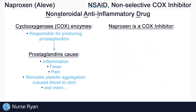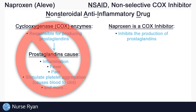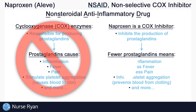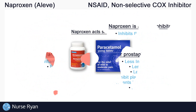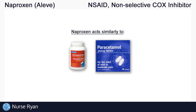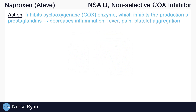Naproxen is an example of a COX inhibitor, which in turn inhibits the production of these prostaglandins, and fewer prostaglandins leads to less inflammation, less fever, less pain, and less blood clotting to a certain extent. If you know how acetaminophen or paracetamol works, you might recognize that naproxen works in a very similar way. The main difference being that naproxen is an anti-inflammatory, while acetaminophen is not, meaning naproxen might work better in cases of inflammatory-induced pain.